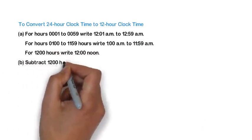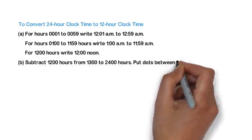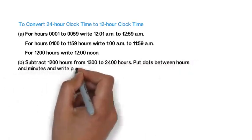Subtract 1200 hours from 1300 to 2400 hours. Put dots between hours and minutes and write p.m.